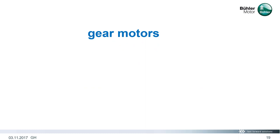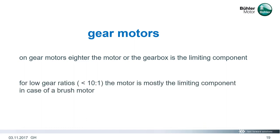Life estimation on gear motors has to be split into the gear and the motor part. Either the motor or the gearbox may be the limiting component. For low gear ratios less than 10 to 1 the motor is mostly the limiting component, if it's a brush motor. Brushless motors typically survive the gearbox.